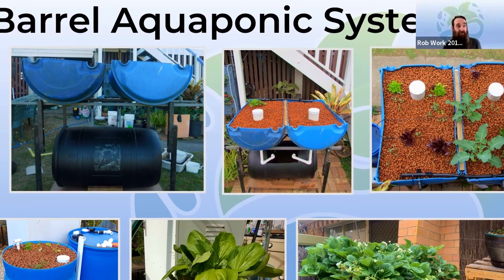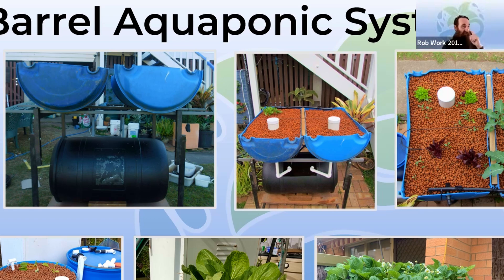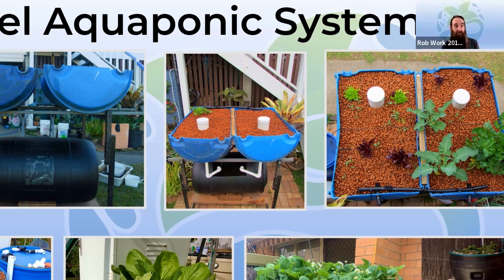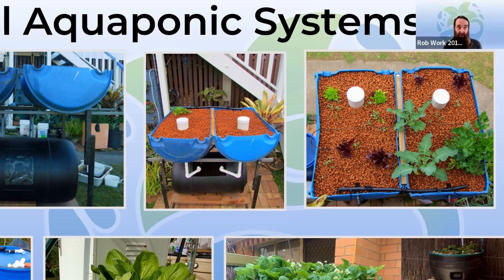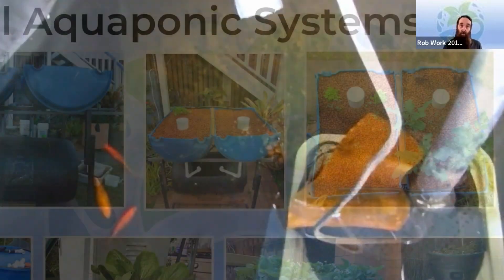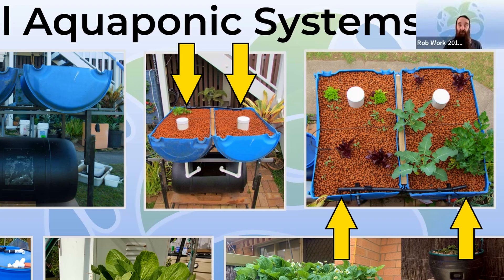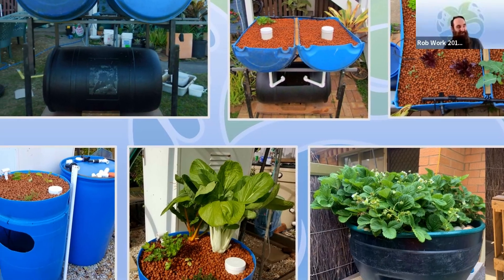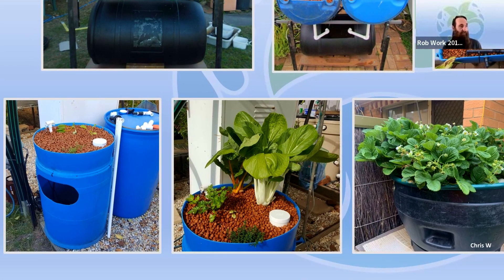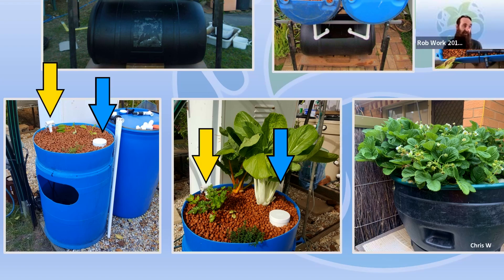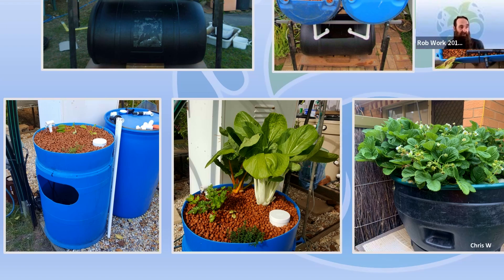Here are some barrel system examples. Our first aquaponic system was made from barrels washed up in the 2011 floods — we washed them out and turned them into grow beds with a 200-litre barrel at the bottom housing goldfish and yabbies, running a basic flood-and-drain system with bell siphons. Down here there's a little chop-and-flip — you chop the top off, flip it over, add a bell siphon, and cycle water through. We cycled that one using urine as a fertilizer before the fish went in, and it grew very green-looking plants.